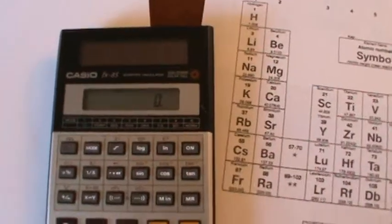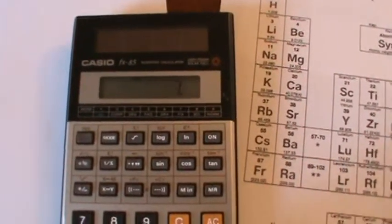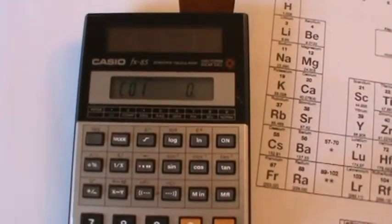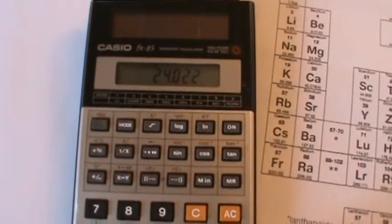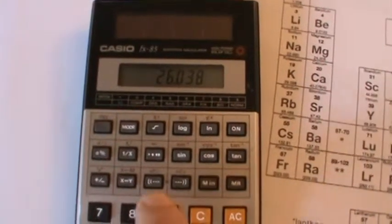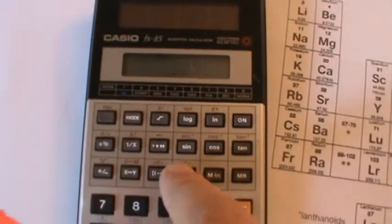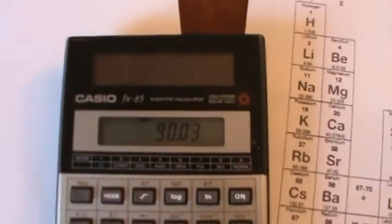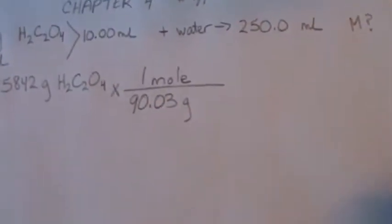So I can come over here and I can say, well, I have two hydrogens times 1.008, and I have two carbons and I have four oxygens. And my result there is 90.03, so I have 90.03 grams per mole.